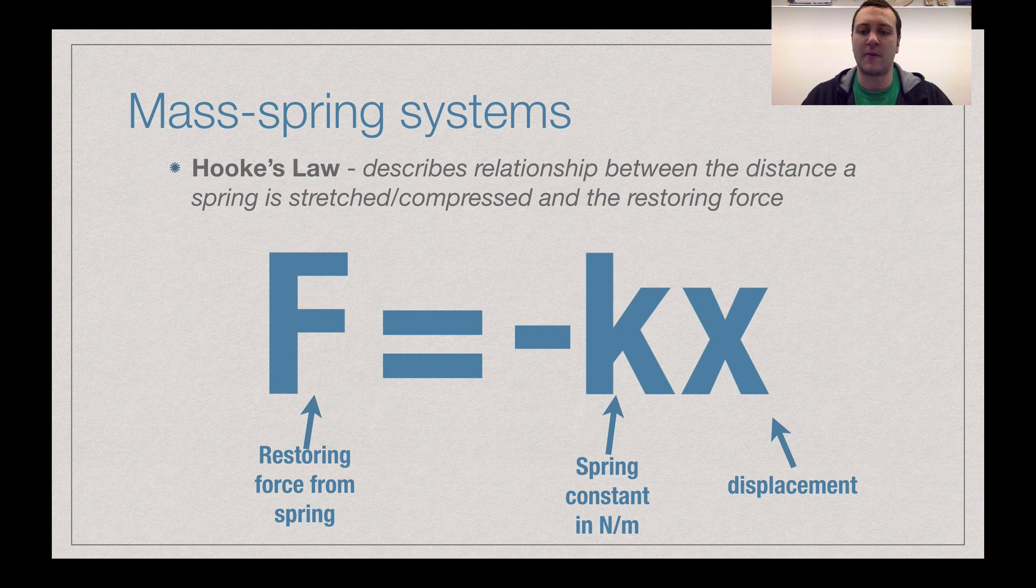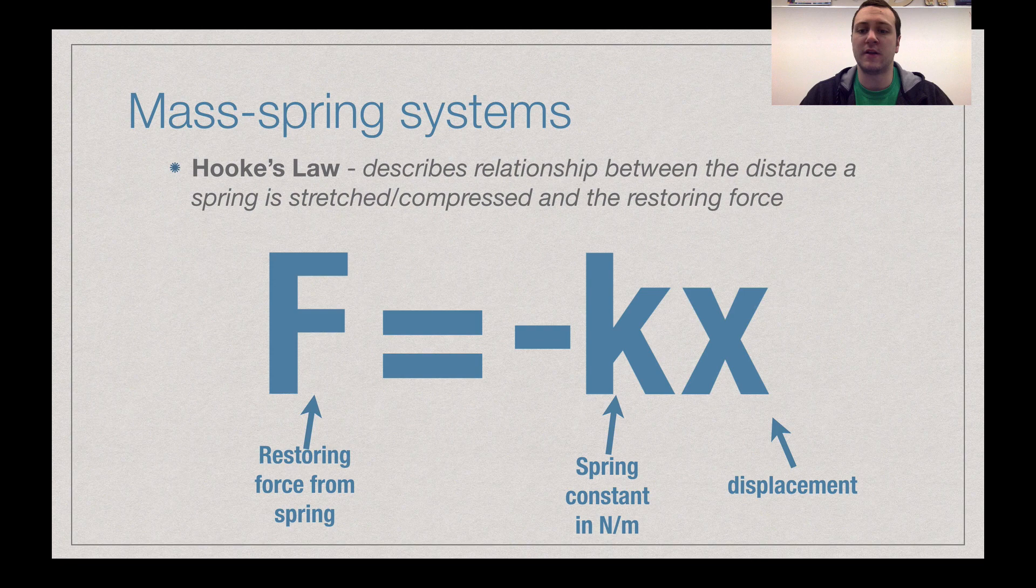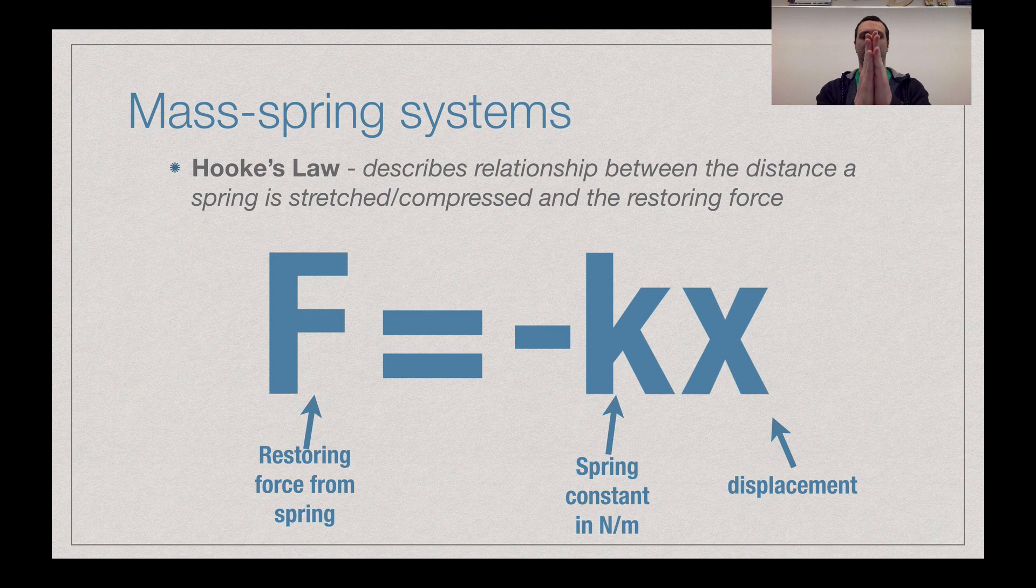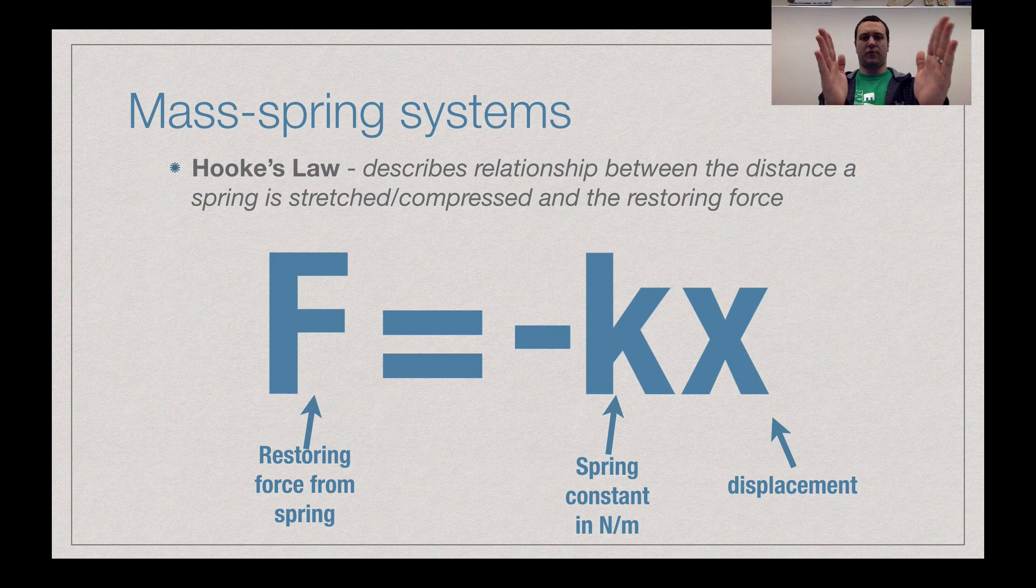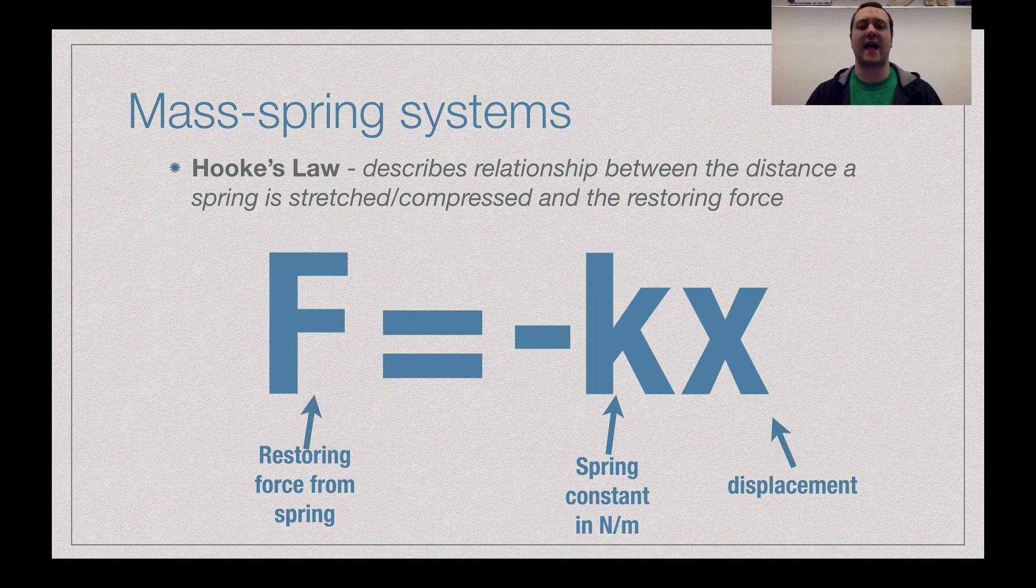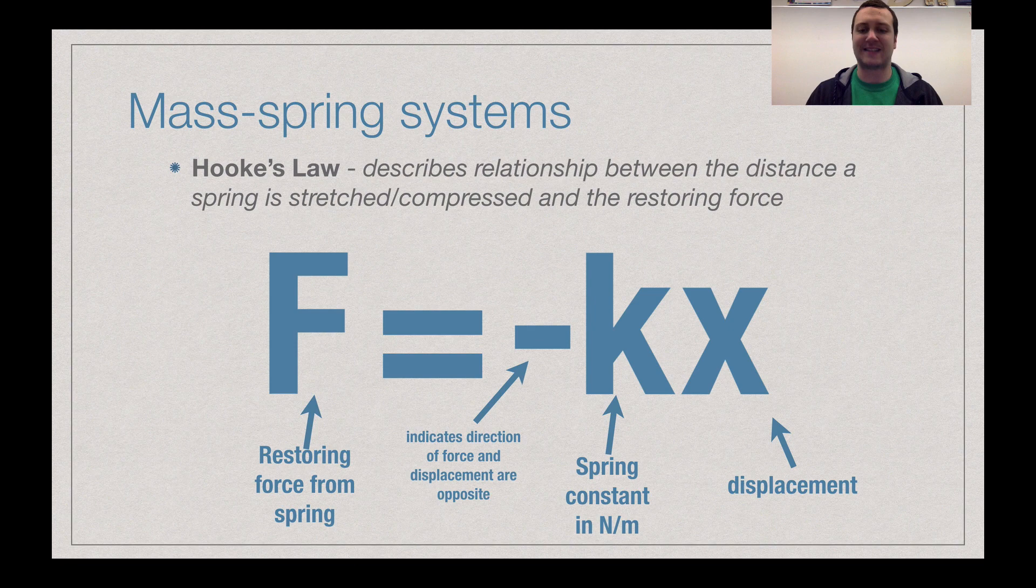Remember that x, that displacement, is how far that is going to move. So really, you could almost see x as the amplitude here. So you take your equilibrium for that spring, you stretch it so far, that's your displacement. Or you compress it, you shrink that thing down, and as you compress it, we're going to get that force acting in a different direction. And that's what that negative tells us.